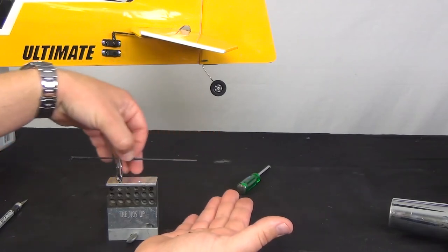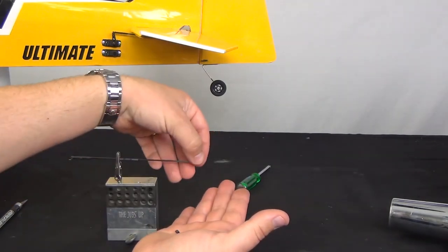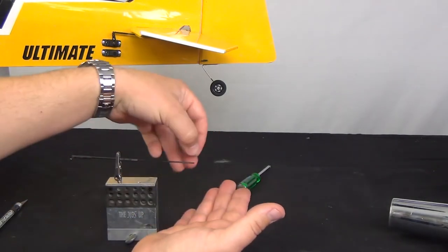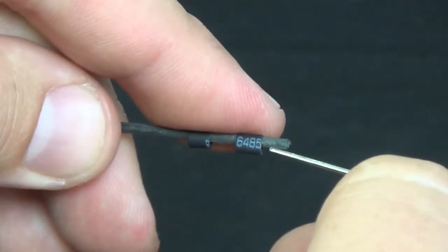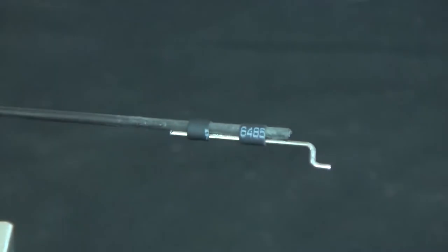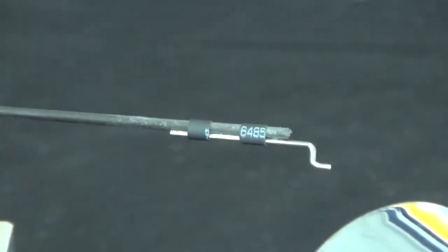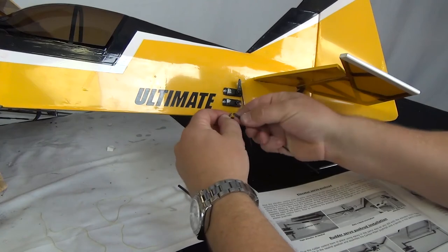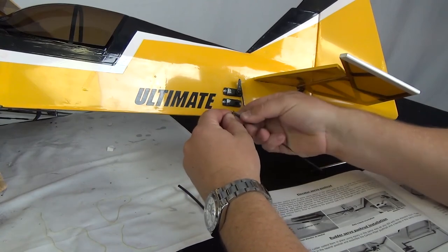Next we slide the long piece of heat shrink on down the rod, followed by the two smaller pieces, leaving them towards the end. Insert the Z-Bend against the rod under the guidance of the two small pieces and shrink them down. This will keep the linkage securely in place so we can set the length.